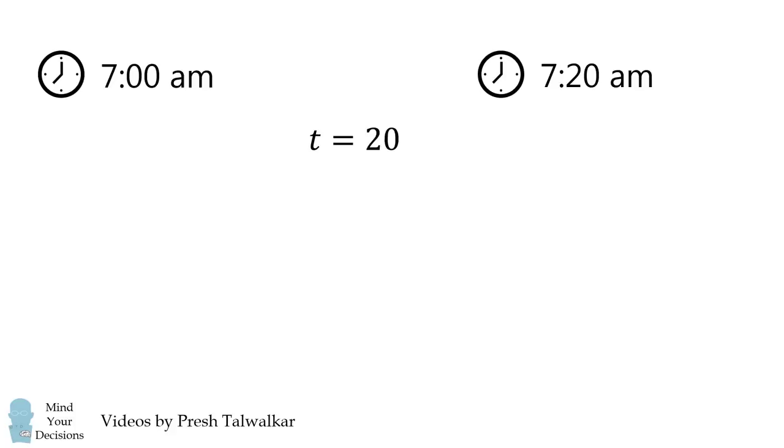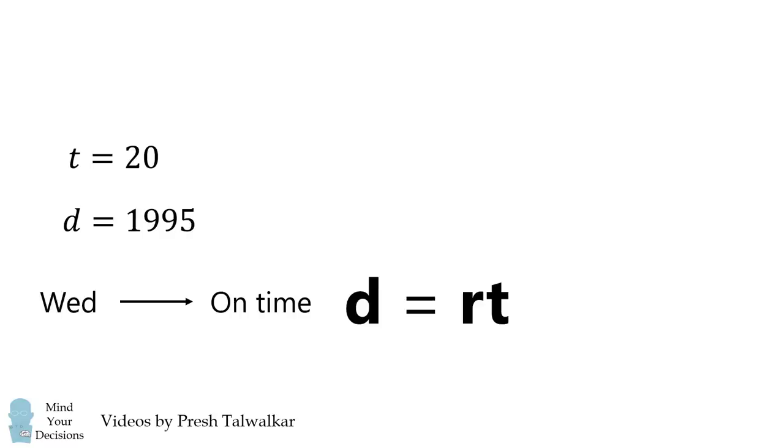Now, on Wednesday he goes at some speed and reaches on time. What was his speed? We'll go back to the equation for Monday, and substitute in for the time. We then solve for the distance d as 95 times 21, and that'll be equal to 1995. We can then use our equation d = rt on Wednesday, and we need to solve for r. So 1995 = r times 20.